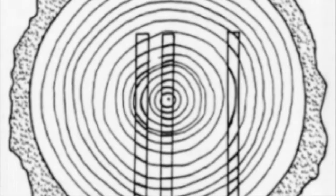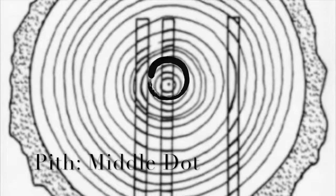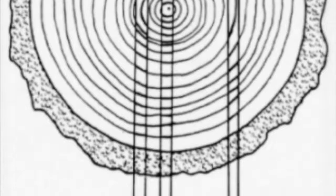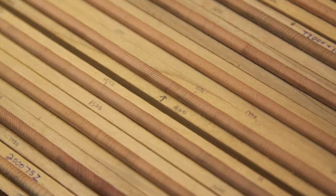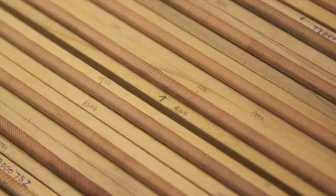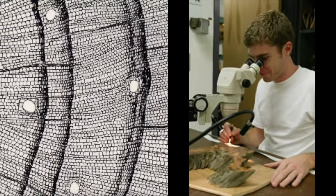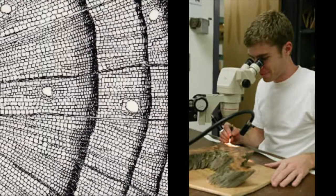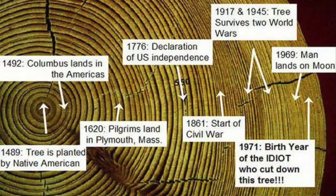Side note: when you are taking increment cores, it is essential that you include the pith, or center of the tree, in your increment core, or else you will be unable to date the sample. In this case, cores A and C are useless. After dendrochronologists take a large number of samples from an area, the samples are observed under a microscope. Dendrochronologists count the tree rings and determine how old the tree was when it began growing, so they can associate each of the growth rings with a year.